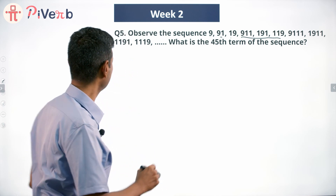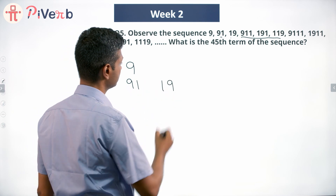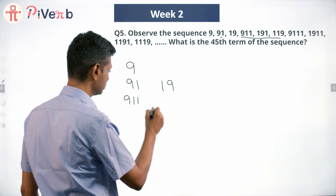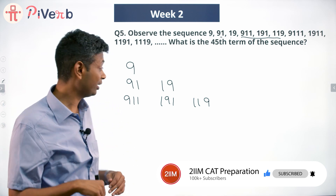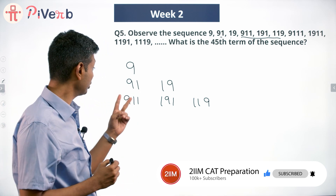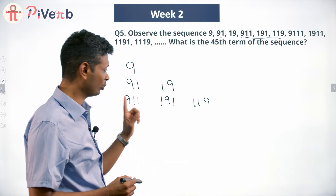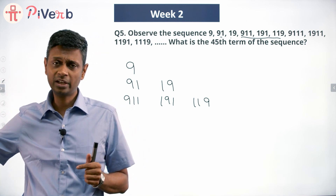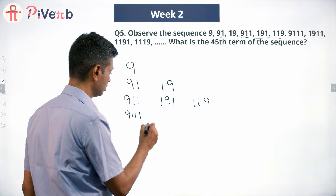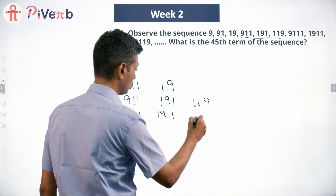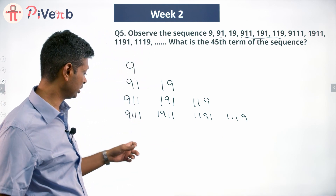I'll write it down slightly differently. I start with 9. Second number: 91. Third number: 19. Then 911, 191, 119. Then 9111, 1911, 1191, 1119. What's happening is: I have a one-digit number 9, then two-digit numbers where 9 moves from the first to the second digit, then three-digit numbers where 9 moves through each position. Four-digit numbers will follow the same pattern. Then five, six, seven, eight-digit numbers and so on.